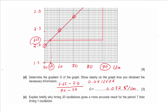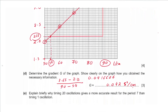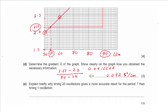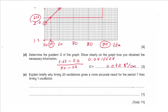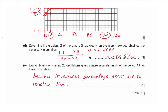Not all of you will draw the same exact line, so you will not all get the same exact gradient, and that's okay. Part E says: explain briefly why timing 20 oscillations gives a more accurate result for the period T than timing 1 oscillation. We say it reduces the percentage error due to reaction time or reflex time.